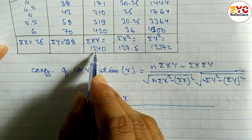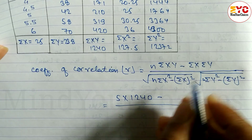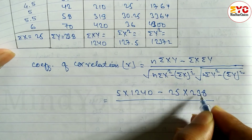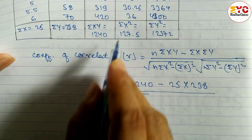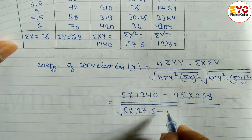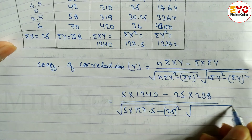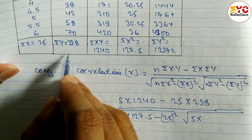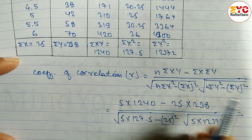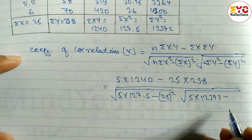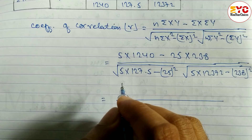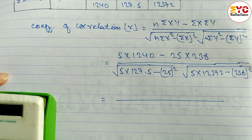Now we put in the values. n is equal to 5 because there are 5 students. Σxy = 1240, Σx = 25, Σy = 238, Σx² = 127.5, Σy² = 12372. So we write 5 into 1240 minus 25 into 238, all under the root of 5 into 127.5 minus 25 squared, times 5 into 12372 minus 238 squared.